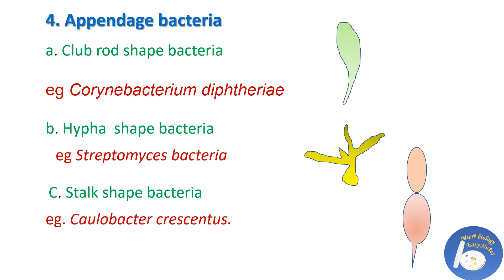The next shape is Appendaged bacteria, with three subcategories. The first is club rod-shaped bacteria — some bacteria exhibit a different shape in culture, like Corynebacterium diphtheriae, which is rod-shaped but in culture looks like a club rod (a rod carried by a shepherd). The next subcategory is hypha-shaped bacteria, which look like long branching filamentous structures. An example is Streptomyces bacteria. The next subcategory is stalk-shaped bacteria — an unusual shape where two cells are together, one having a stalk-like structure at the end that helps in movement. An example is Caulobacter crescentus.